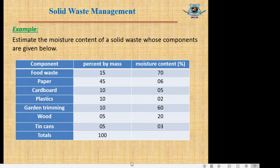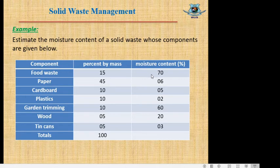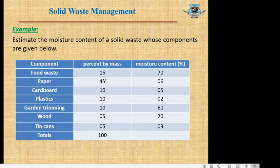First we will calculate the moisture content of municipal solid waste. Here is a table showing components of solid waste with their percent by mass and moisture content in percentage. Food waste is 15 percent of total mass — that means 15 kg out of 100 kg total. Paper waste is 45 kg. From this data we will calculate the moisture content of the solid waste.